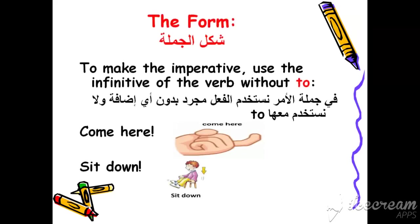The form of the imperative: to make the imperative we use the infinitive form of the verb without any subject. يعني ببلش بالفعل مباشرة بدون subject — ما بحكي مثلا 'you come here' أو 'she comes here' لأنها ساعتها بتصير present simple. For example: 'Come here', 'Sit down'. We start with the infinitive verb without using 'to'.